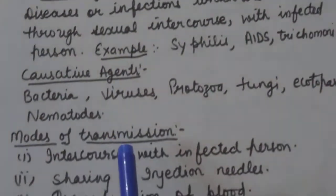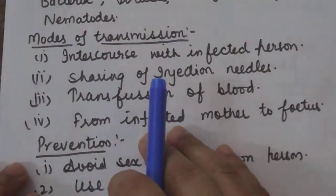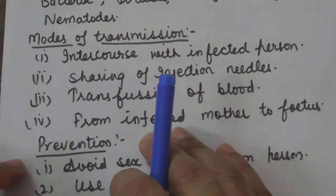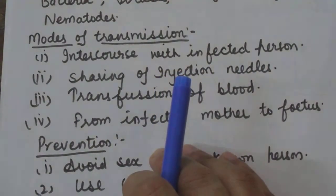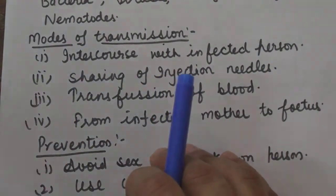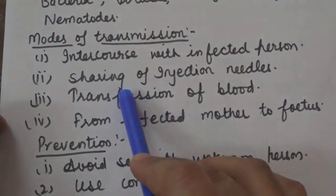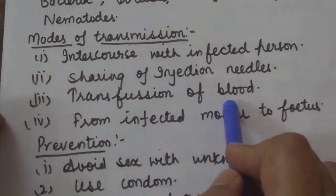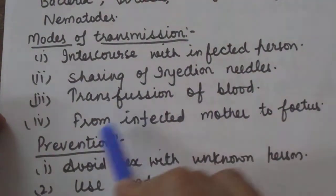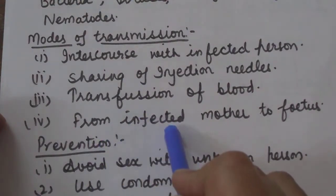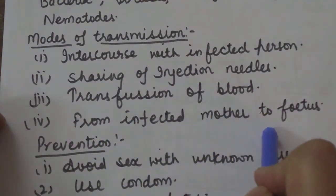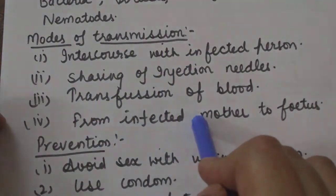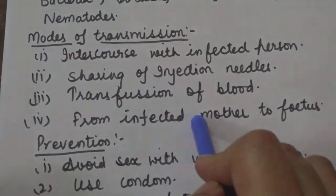What is the mode of transmission of these diseases? STDs are generally transmitted as a result of sexual intercourse with an infected person, sharing of injection needles, surgical instruments with an infected person, transfusion of blood from an infected person, and from an infected mother to the fetus.